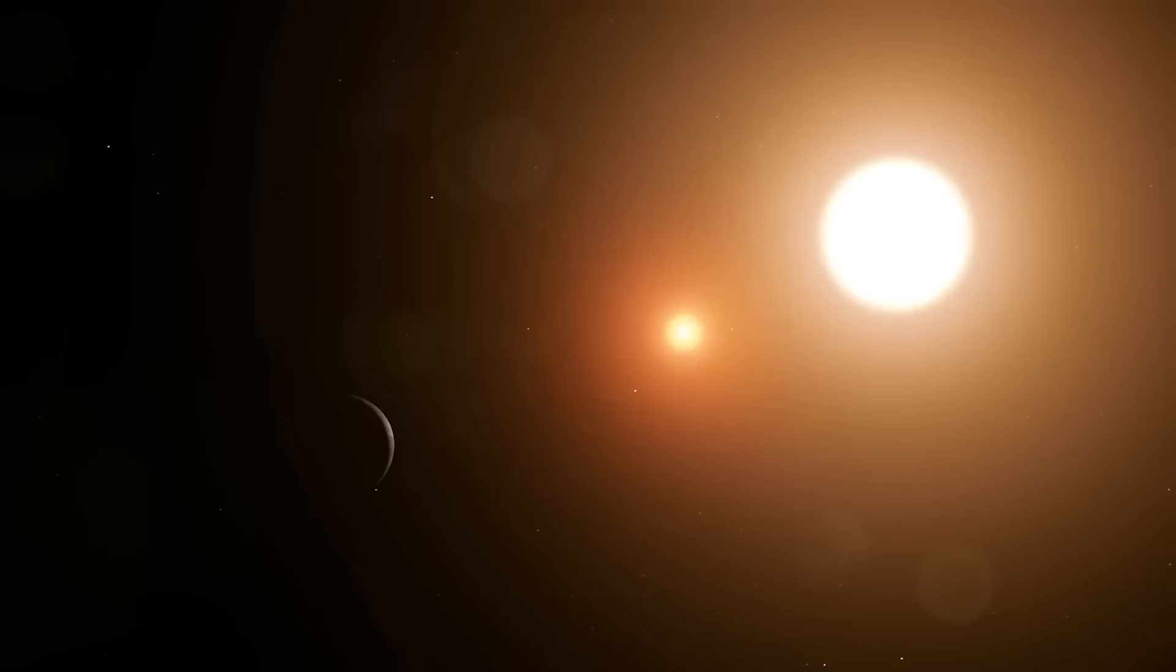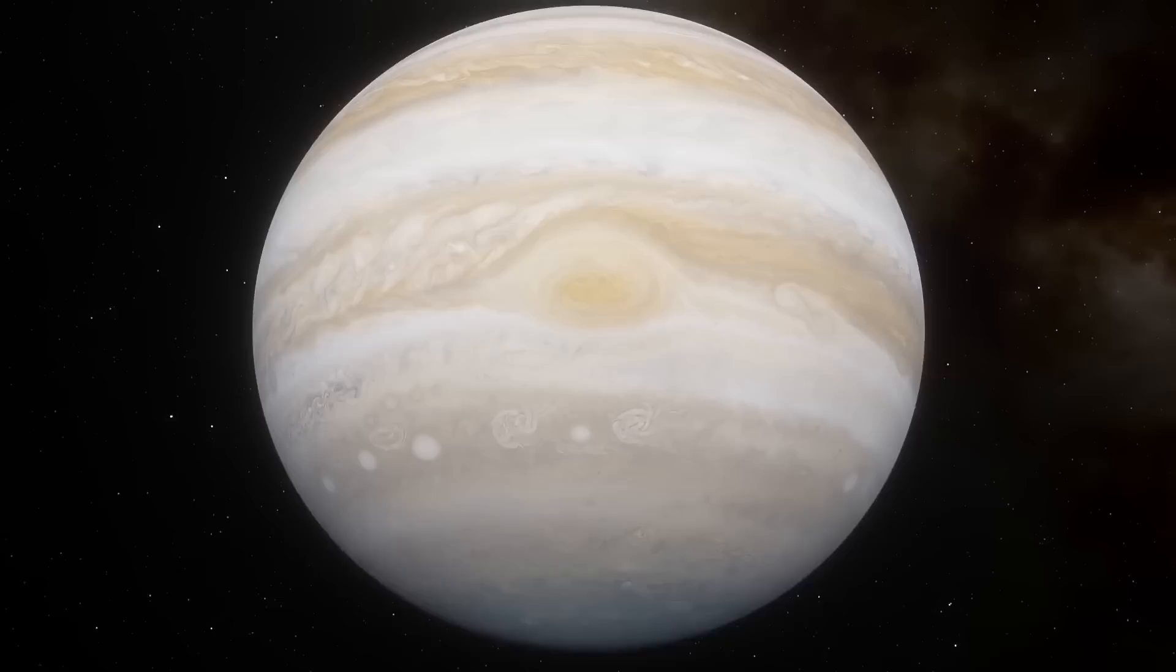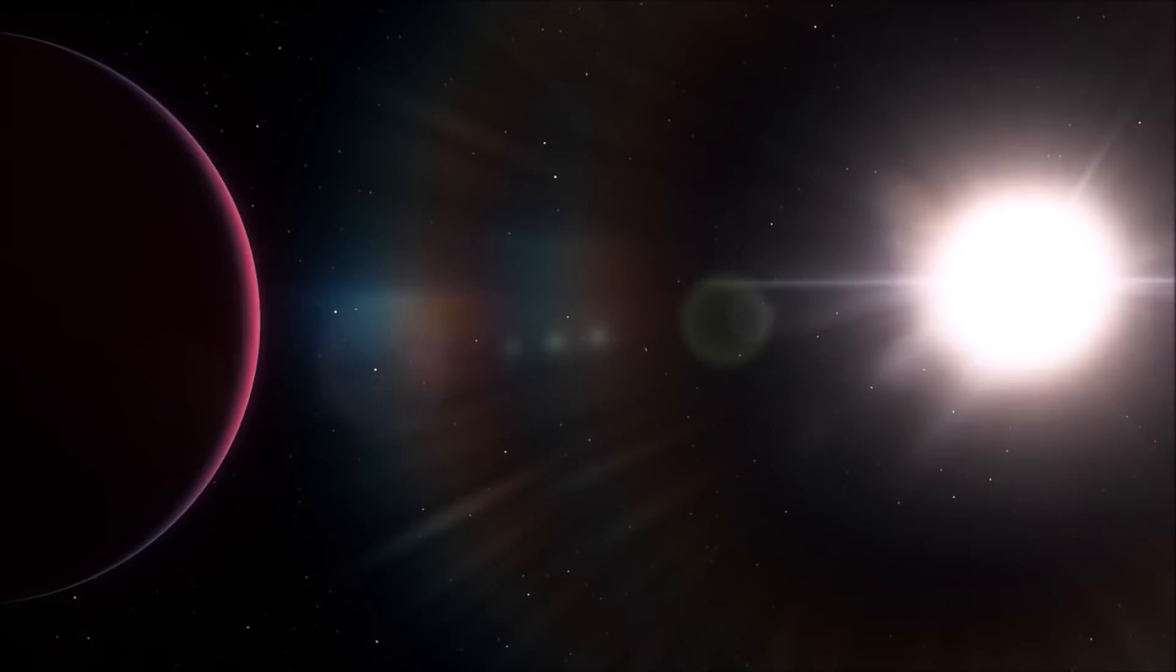Regarding this exoplanet's size, WASP-39b is believed to have a mass of about 0.28 times the mass of Jupiter, and a radius of about 1.27 times that of Jupiter. The exoplanet is also well known for having an extremely low density compared to WASP-17b.